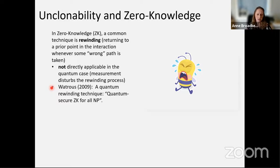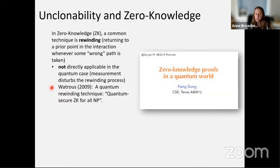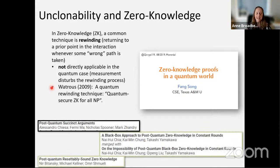This was resolved at least to some extent by Watrous in 2009, who proposed a quantum rewinding technique. The consequence was to show that classical proofs were also secure against quantum protocols. I'd like to refer you to a really nice tutorial talk given at QCrypt 2019 by Fang Song, who goes into all the intricacies of zero-knowledge proofs in a quantum world. You can find his slides on his personal website.